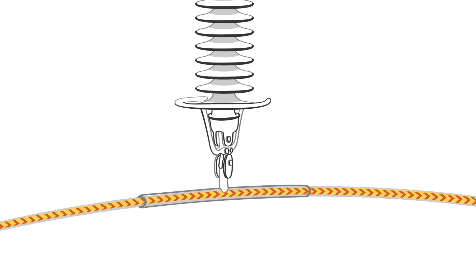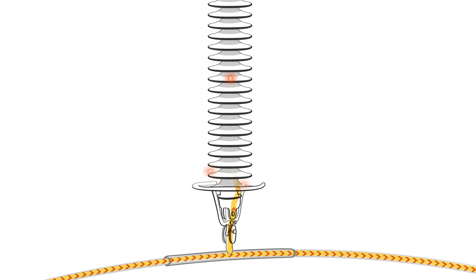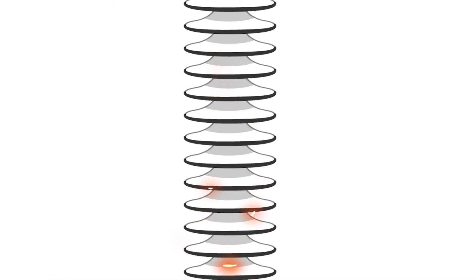If electricity begins to flow over the insulator, it is malfunctioning. This begins with a small amount of electricity, so-called partial discharges. You can think of them as small sparks that indicate a harmful flow of electricity.